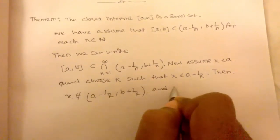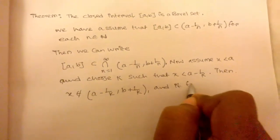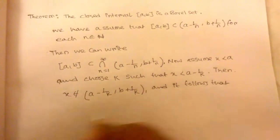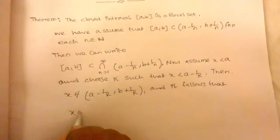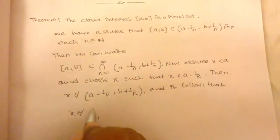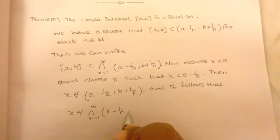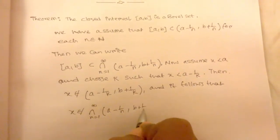And it follows that x does not belong to the intersection from n equals 1 to infinity of (a - 1/n, b + 1/n).